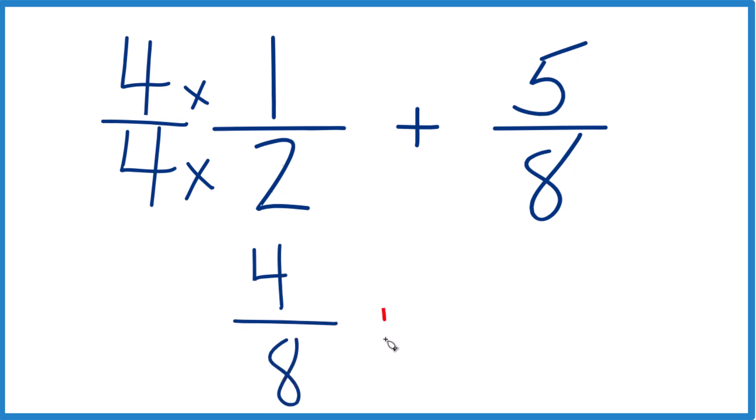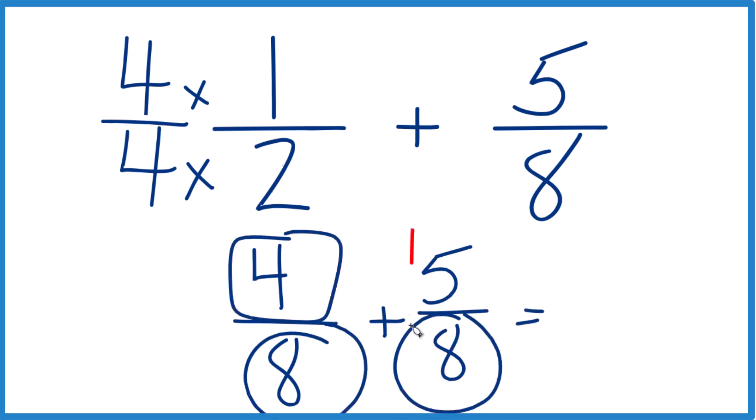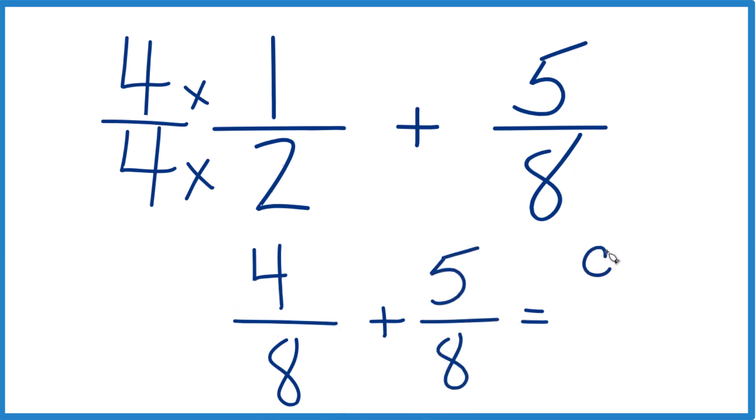So we have four-eighths in our denominator plus five-eighths. And because this denominator is the same here, we can just add these numerators together for our final answer. Four plus five, that's nine. And then we just bring the eight across, and we end up with nine-eighths. So one-half plus five-eighths, that equals nine-eighths.